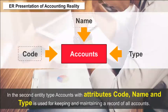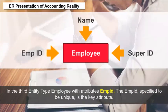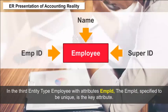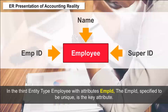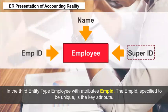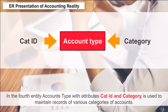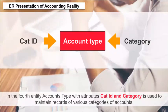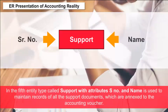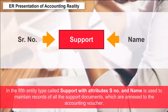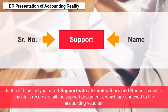Both code and name can be considered key attributes because they are specified as unique. In the third entity type, Employee, with attribute Employee ID specified as unique, is the key attribute. Super ID indicates the employee ID of the controlling office. In the fourth entity, Accounts Type with attributes cat ID and category, is used to maintain records of various categories of accounts. In the fifth entity type, Support, with attributes serial number and name, is used to maintain records of all support documents annexed to the accounting voucher.